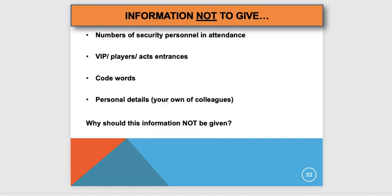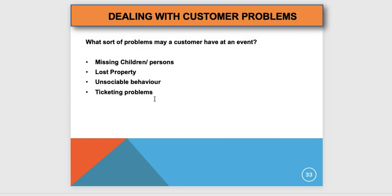Information you should not give out includes: the number of security personnel in attendance; where VIP, player, and act entrances are unless the person has correct accreditation; code words — they exist to avoid causing panic among the public; and personal details of colleagues. Never give out a colleague's name; refer people to the bib number instead. This all relates to counter-terrorism procedure.